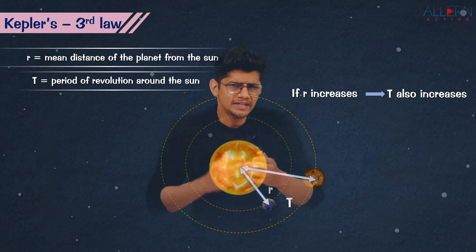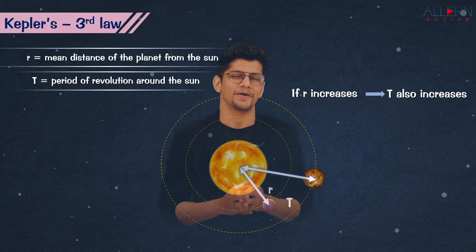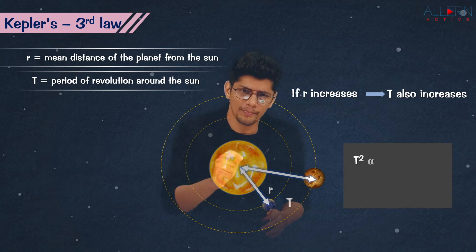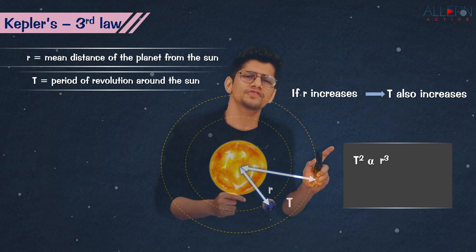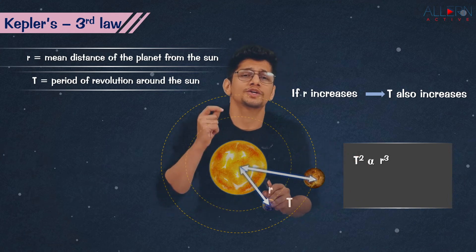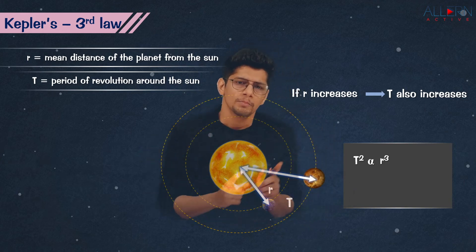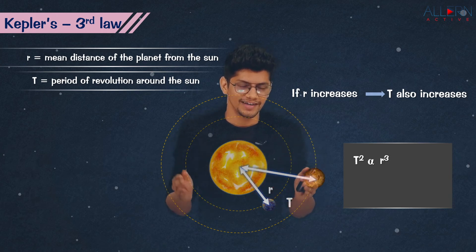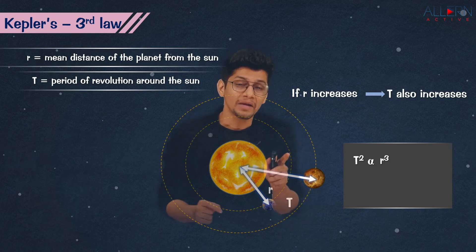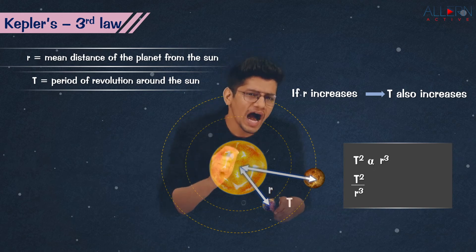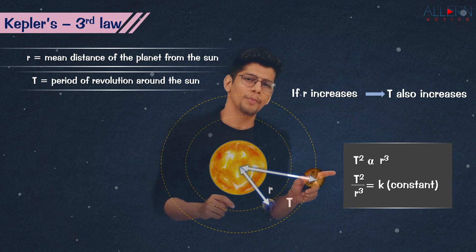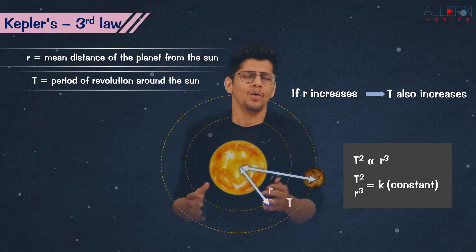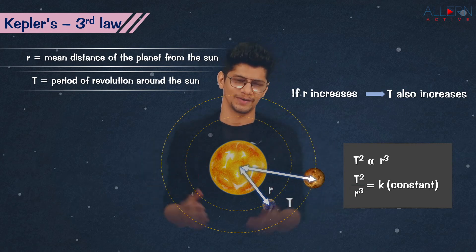Kepler did all the necessary calculations and concluded that T squared is directly proportional to R cubed. Whenever two things are directly proportional, their ratio is constant — so T squared upon R cubed equals a constant K. This formula, T² / R³ = K, is important for numericals.